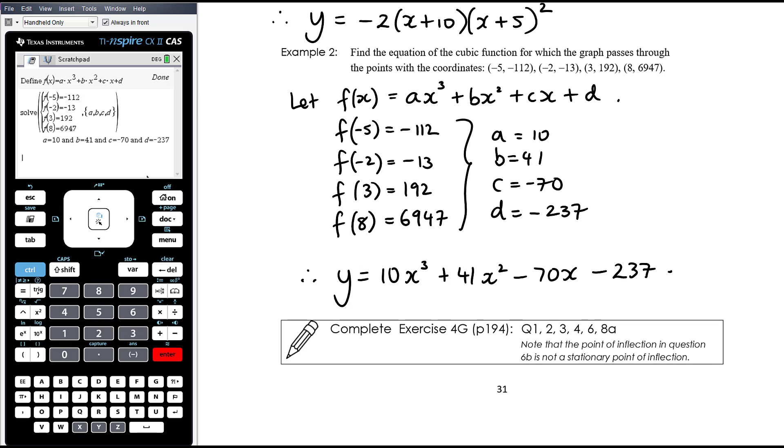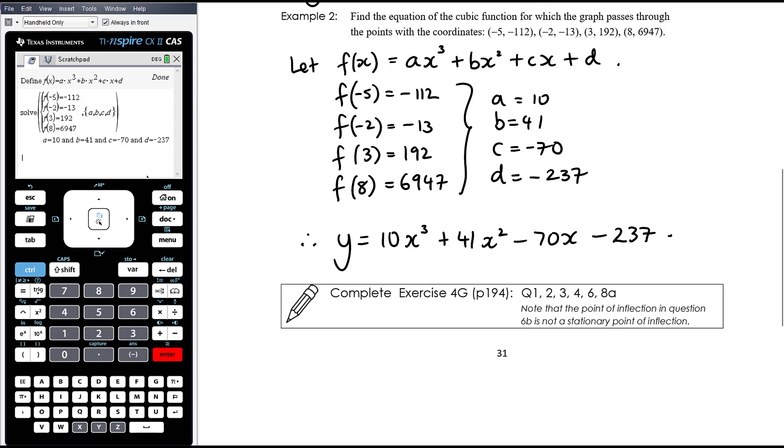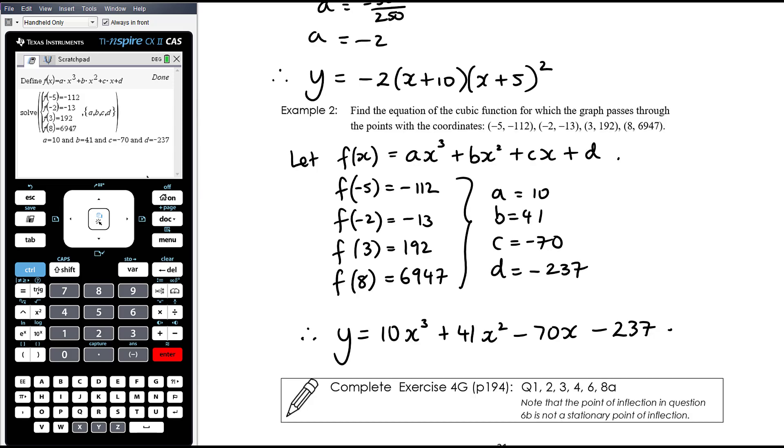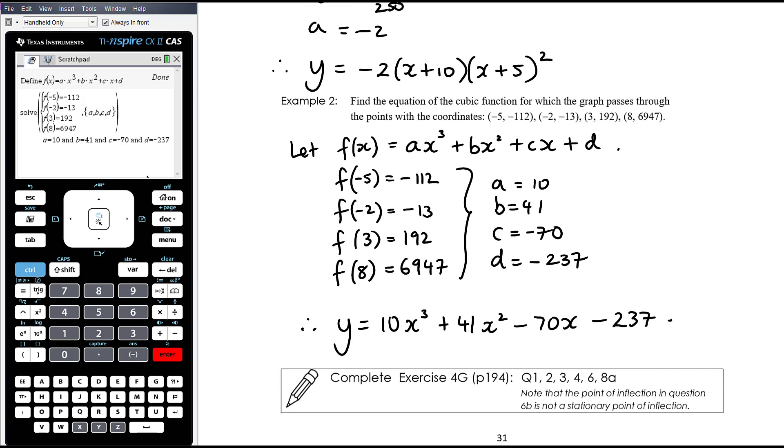OK, work today is from exercise 4g. Please note that in question 6b, there's a graph that's a bit ambiguous. It has a point of inflection, but it's not a stationary point of inflection. So in question 6b, the form of the equation is not this. OK, instead you actually need to do similar to what we've just done in example 2. Just deal with a general cubic and subbing in the points that you've got. OK, I'll leave you on with that. As I said, if you need some more examples along this line, I'll link a video that I recorded with my year 10s last year with some more examples for you.